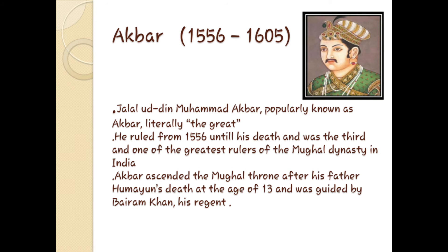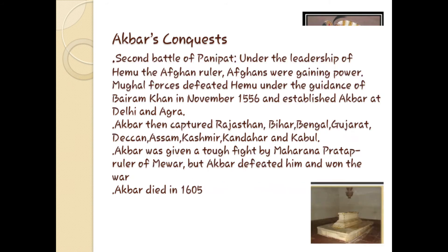Behram Khan looked after the affairs of administration of the kingdom on Akbar's behalf and later became his trusted and strongest ally. Behram Khan took charge of the Mughal government on Akbar's behalf for four years, during which he conquered Gwalior, Ajmer, and Jaipur. In 1560 CE, when Akbar became 18 years old, he took all the charges into his own hands and released Behram Khan from his regency.